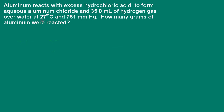The gas is collected over water at 27 degrees Celsius and 751 millimeters of mercury. We're being asked how many grams of aluminum were reacted. In this problem, we can use the ideal gas law to determine the number of moles of hydrogen gas, using PV = nRT and solving for moles. Once we solve for the number of moles of hydrogen gas, we use the balanced chemical equation to relate moles of hydrogen gas to moles of aluminum, and then calculate the number of grams of aluminum that were reacted.